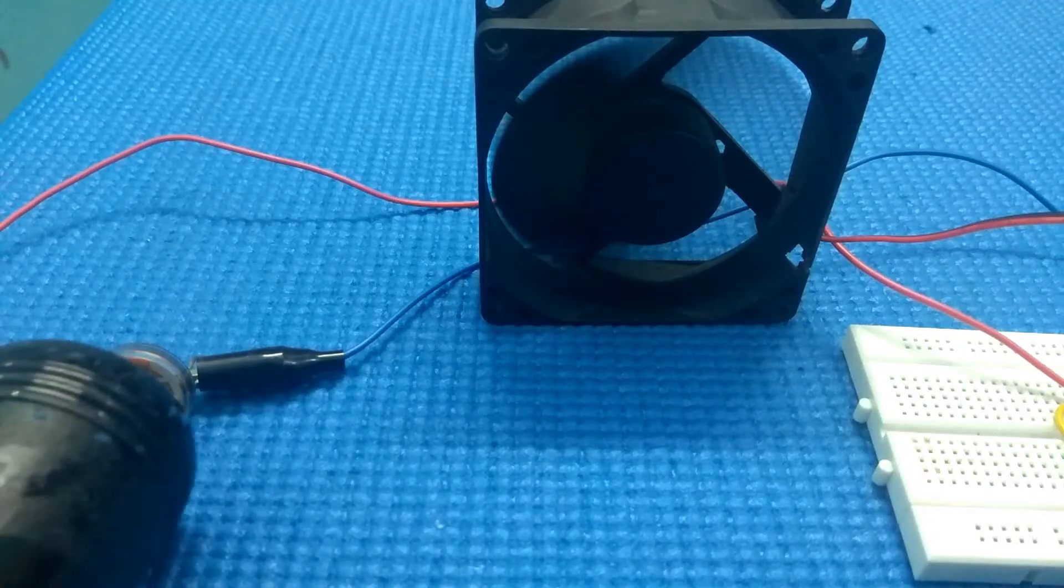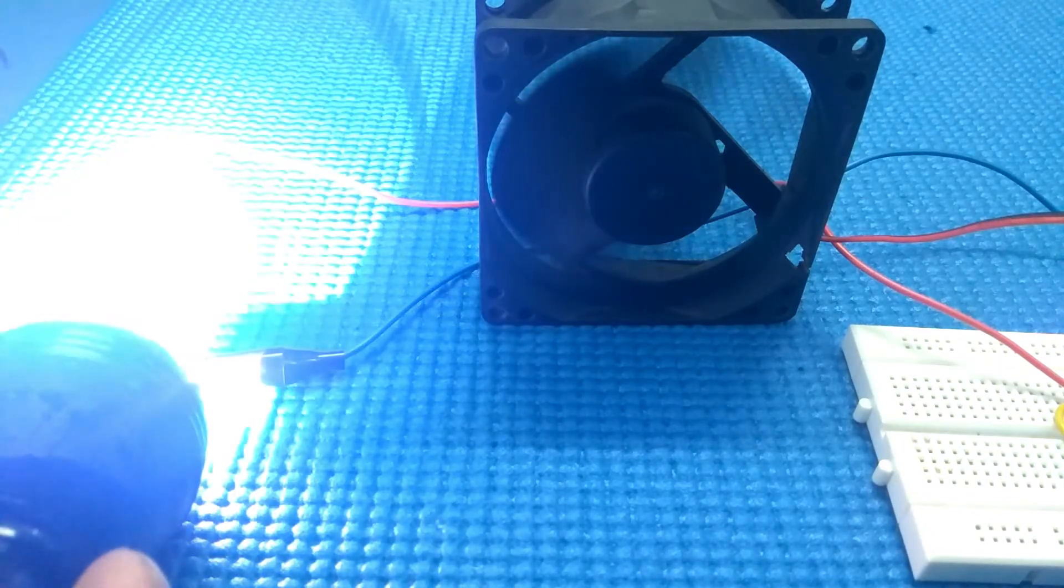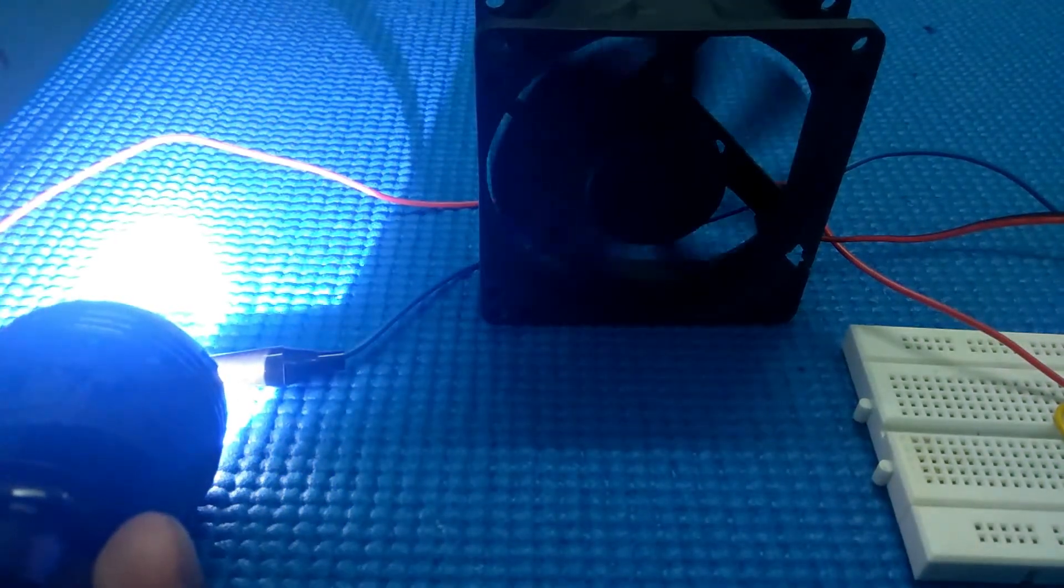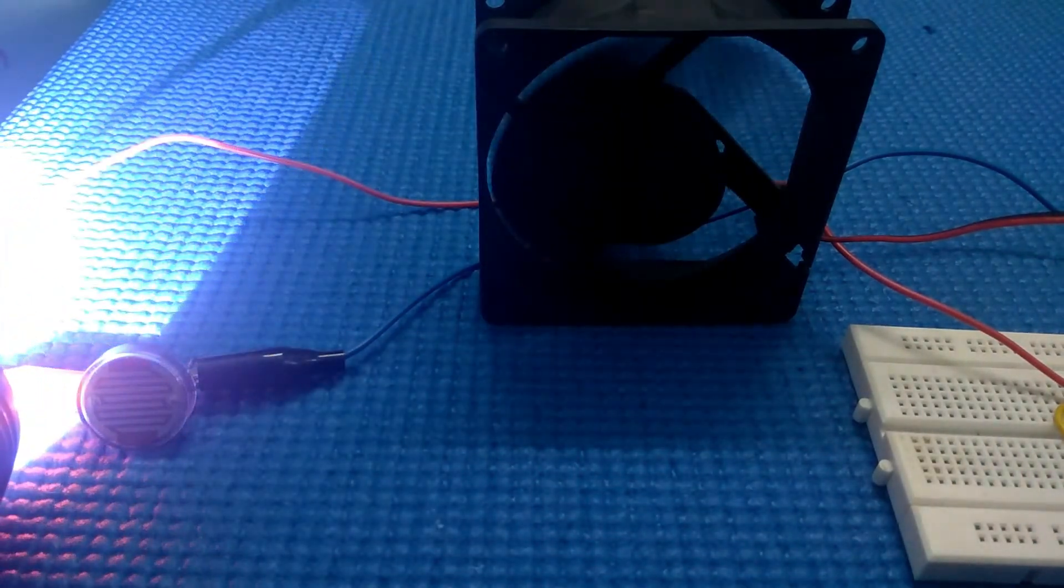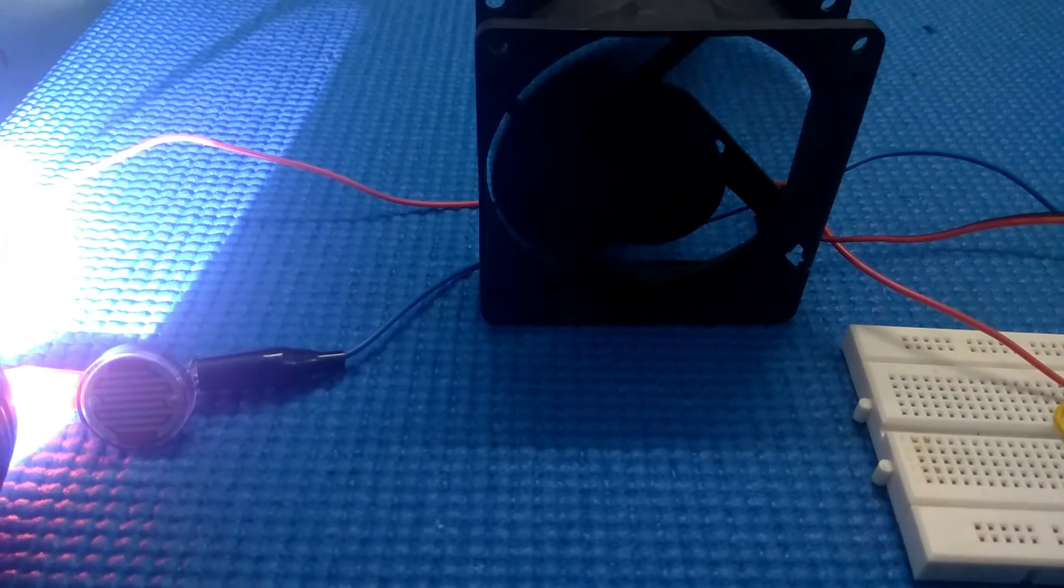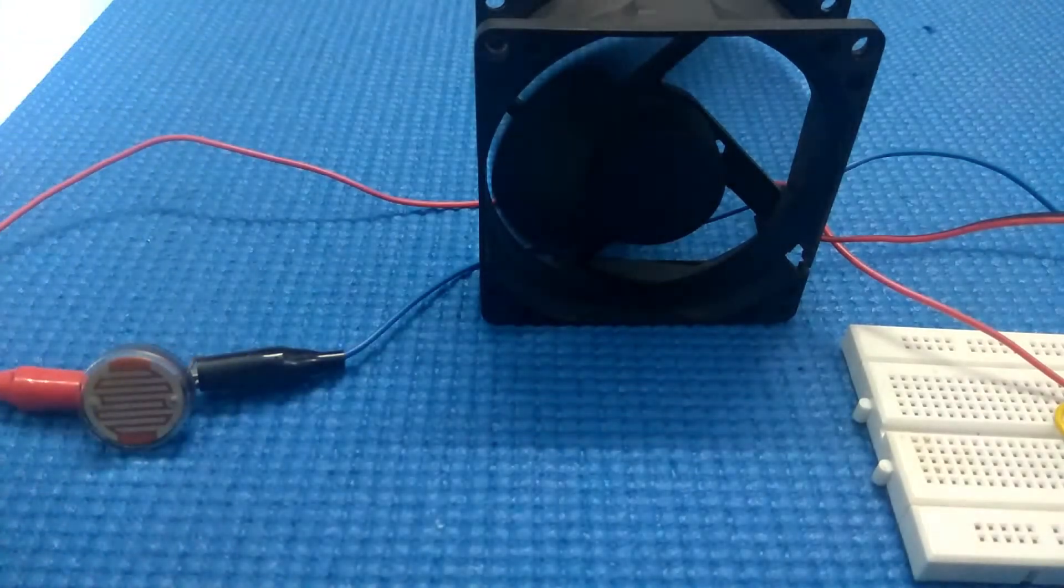Let's see how it works. When I turn on the flashlight you could see the speed of the DC motor is coming down and it ceases to move. And when I move the flashlight away it again starts to rotate in its full speed.